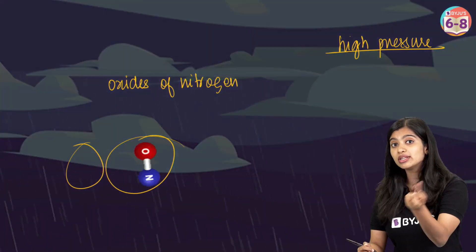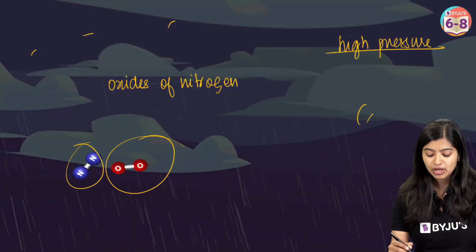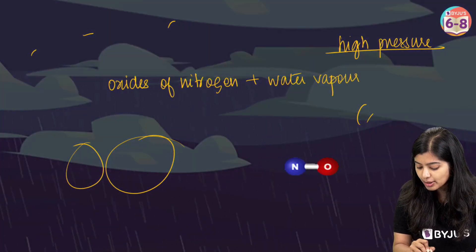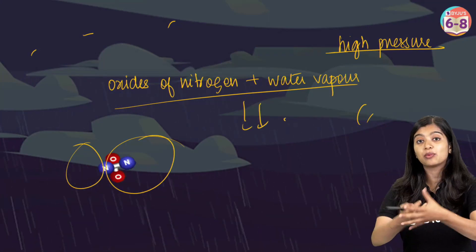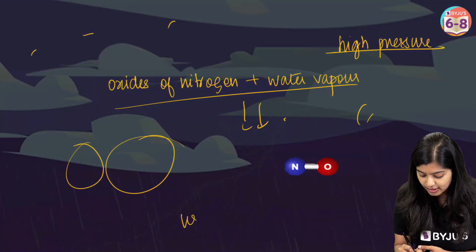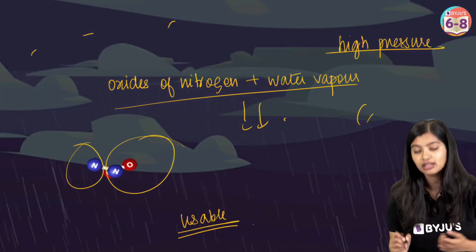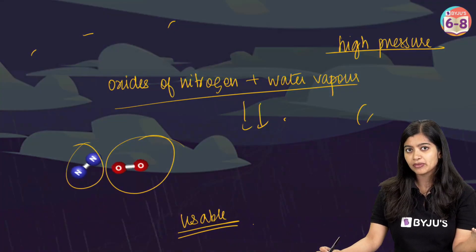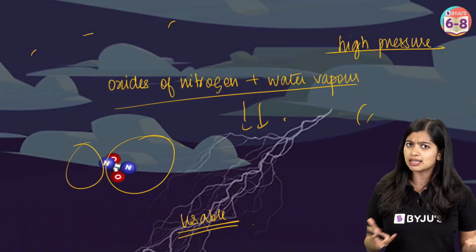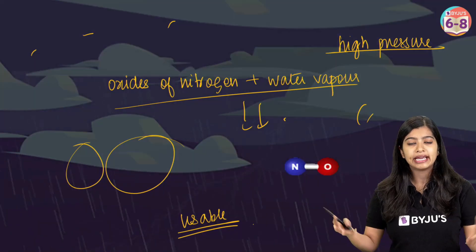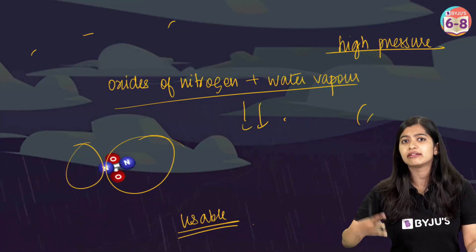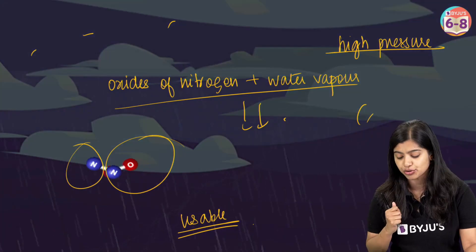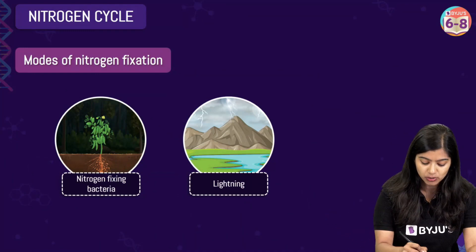In such an environment there is also a lot of water vapor, so the nitrogen oxides combine with water vapor and when it pours down, it reaches the soil in usable forms. That is how lightning plays a key role in nitrogen fixation. However, this is not a very feasible method — it doesn't happen all the time — and alone it would not be enough for living organisms to get their nitrogen.